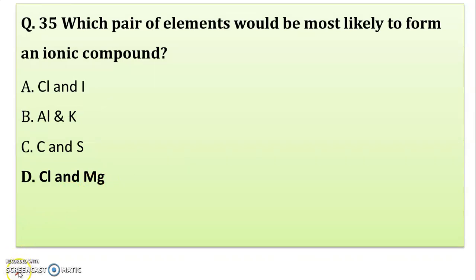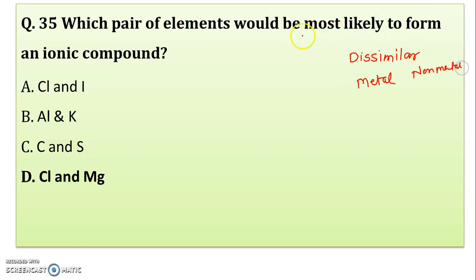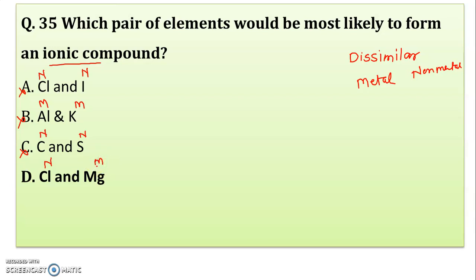Which pair of elements would most likely form an ionic compound? For an ionic compound, you need two dissimilar elements — one metal and one non-metal. Chlorine and iodine: both non-metals — wrong. Aluminium and potassium: both metals — wrong. Carbon and sulphur: both non-metals — wrong. Chlorine (non-metal) and magnesium (metal): correct! They will form an ionic compound.